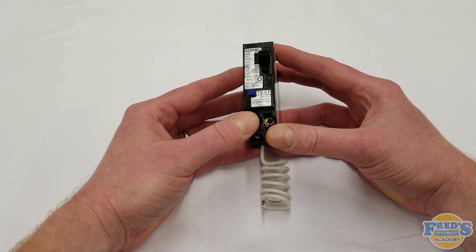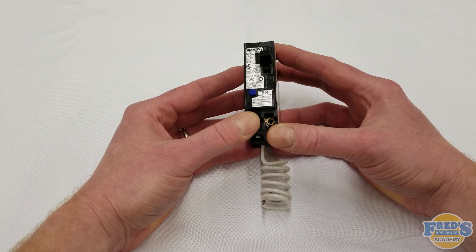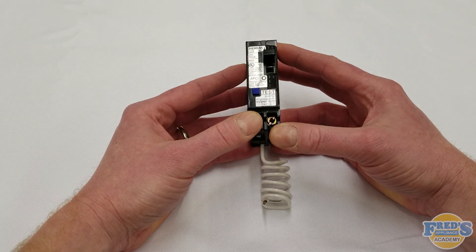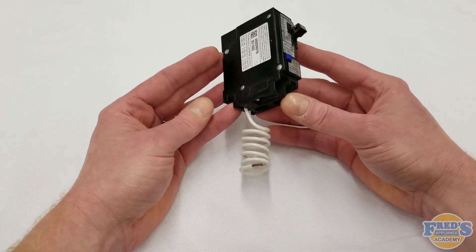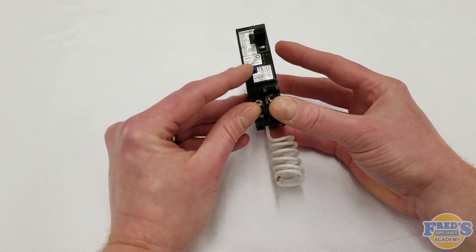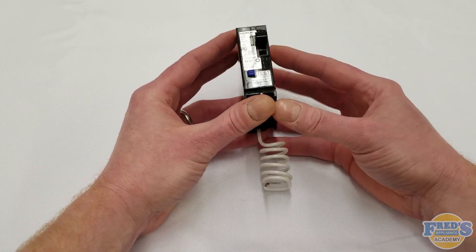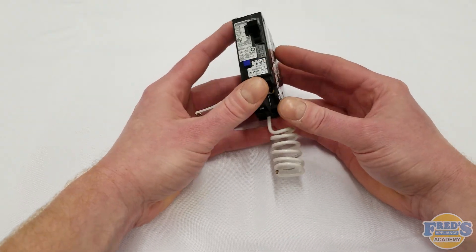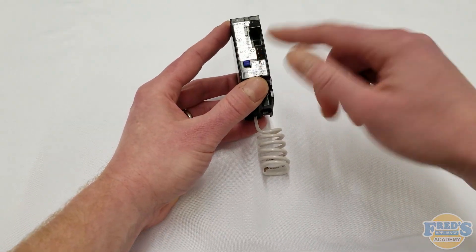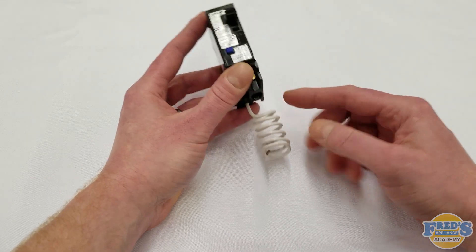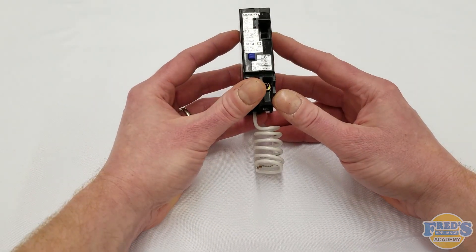Instead of having your actual outlet be the arc fault circuit interrupter, in a modern application the whole house is protected via the breaker. This is what the breaker would look like - it has a little test button right here as well as toggling on and off like any standard breaker. They also can be identified by having AFCI labeled on them and having a neutral wire attached to the breaker itself.